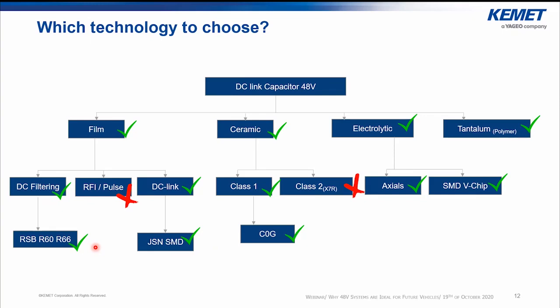From the ceramic series, it is better to select class one dielectrics, looking at the current and stresses the capacitor may endure — we recommend the use of the C0J dielectric. From the electrolytic, we can select the axial series, which has high current capability, and we can also select the SMT V-chip SMT configuration. From the tantalum, we can select the most known automotive part, which is the T598.